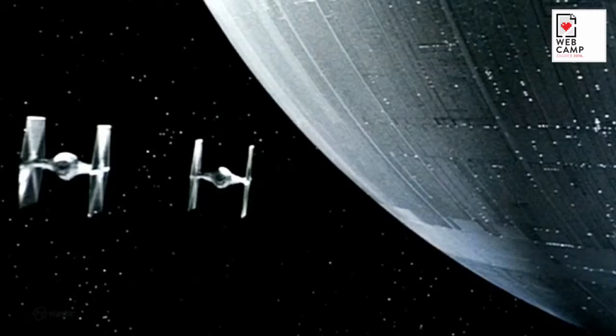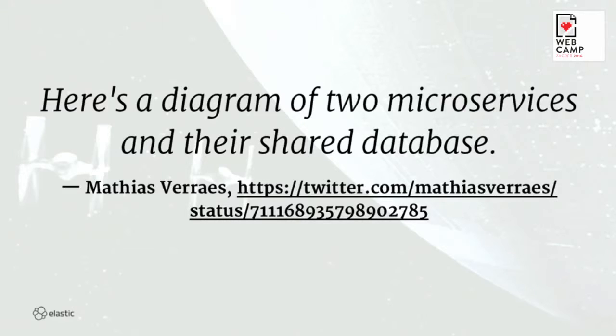That is a shared database and two microservices. The two fighter jets are pretty useless on their own — if the Death Star is gone, they don't have much of a job anymore. So if you have one huge shared database for all your microservices, you're probably not using the full potential and it's probably not as independent as it could be.